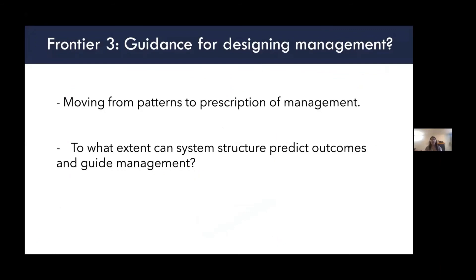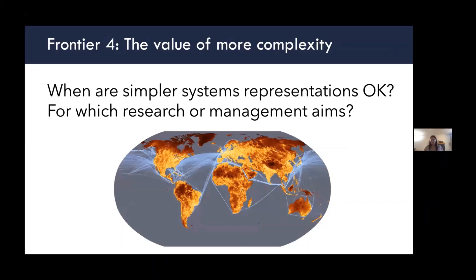The next frontier I see is guidance for management — can we move from describing patterns in networks to prescribing management strategies? A key question is to what extent the structure of the system can actually predict outcomes in terms of dynamics that can guide management, so we could potentially ignore dynamics that are sometimes hard to quantify or observe. Finally, related to all of this, I think studies that can identify when it's really important to incorporate complexity versus when it's okay to ignore it are needed. The question I hope we can discuss is: when are simpler representations of systems okay, and for which research or management aims can we ignore this complexity?